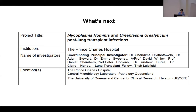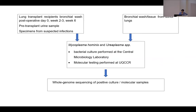Given this increasing prevalence, we needed more data on how prevalent this is, where it comes from, what the complications are, and the best way to diagnose it. We have started a collaborative prospective study between us, Pathology Queensland Microbiology, and UQCCR, enrolling all our lung transplant patients. We're checking bronchial washes, pre-transplant urine samples, and donor bronchial wash tissues — all with mycoplasma-specific culture and PCR testing. If there are positive results, we'll do whole genome sequencing to identify the source.